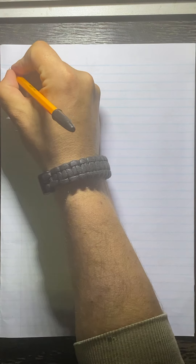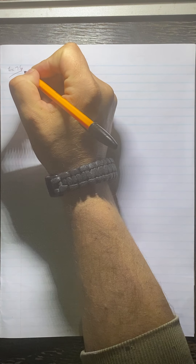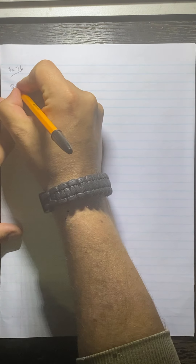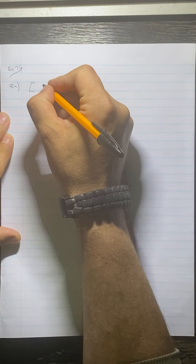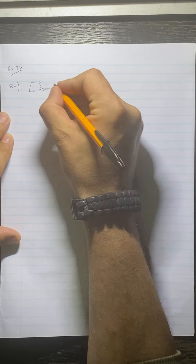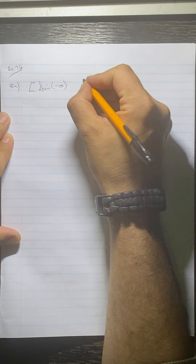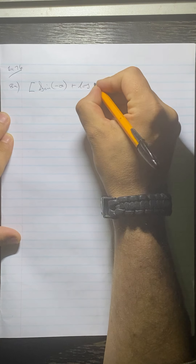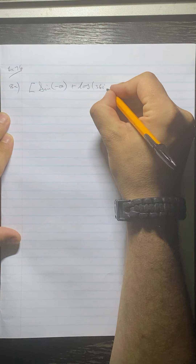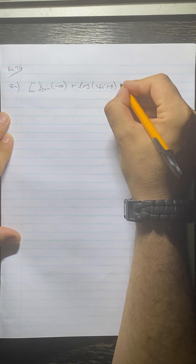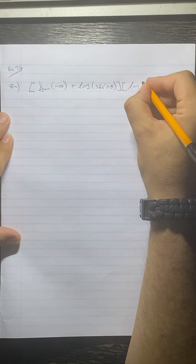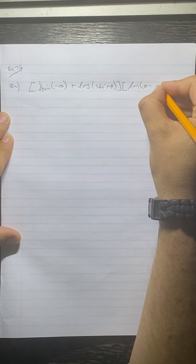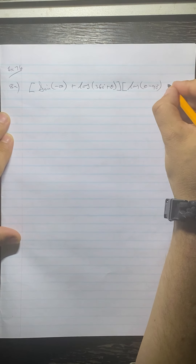We are doing exercise 7.6, number 8. The first question says simplify, and we have sine negative theta plus cos 360 plus theta, multiplied by cos theta minus 90, and then plus cos theta.